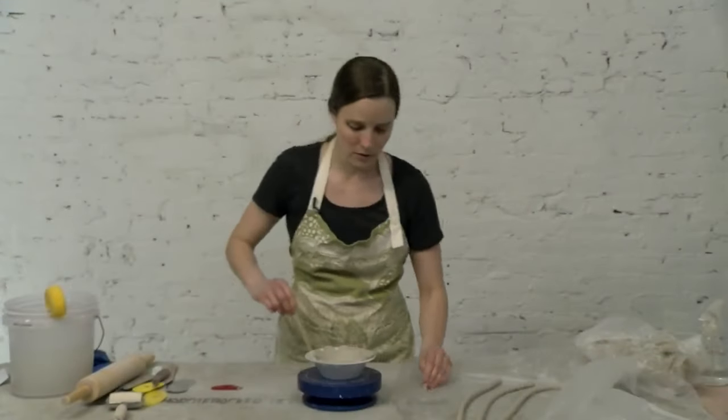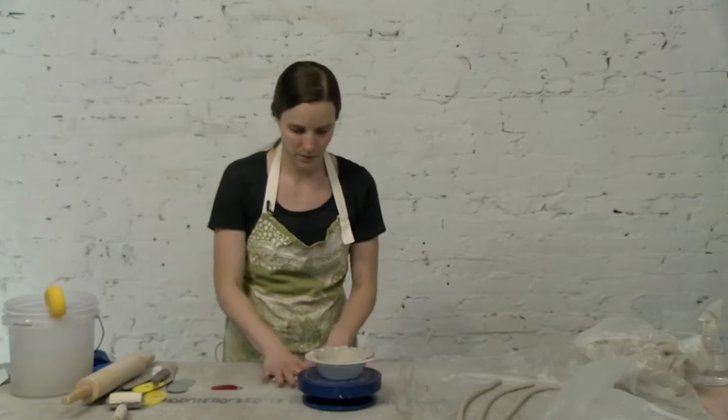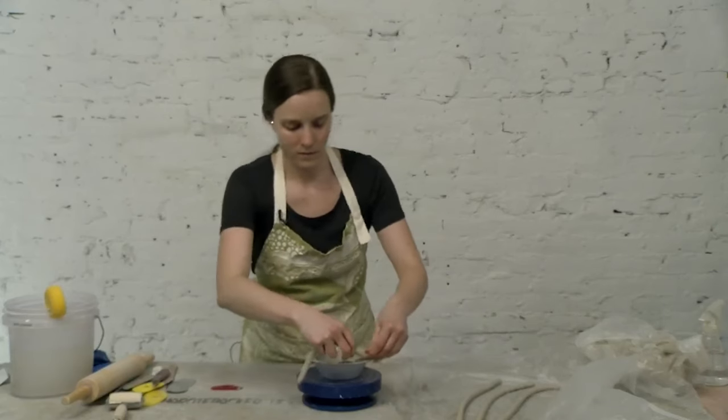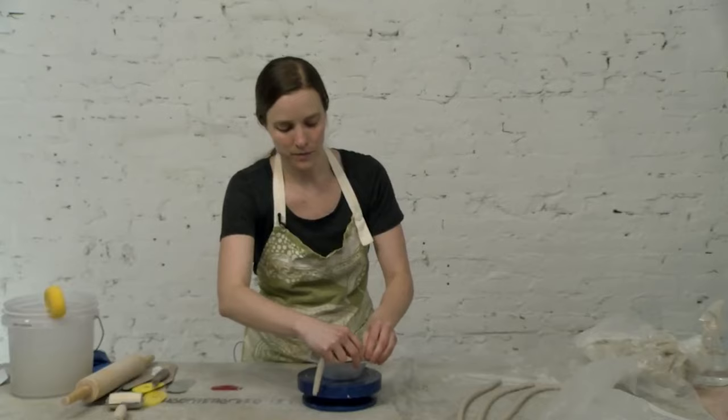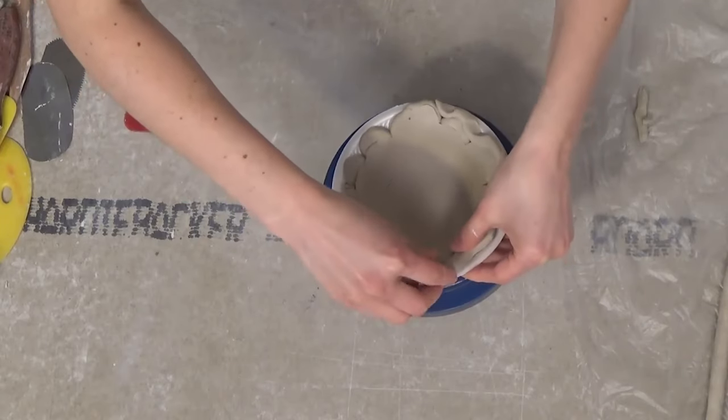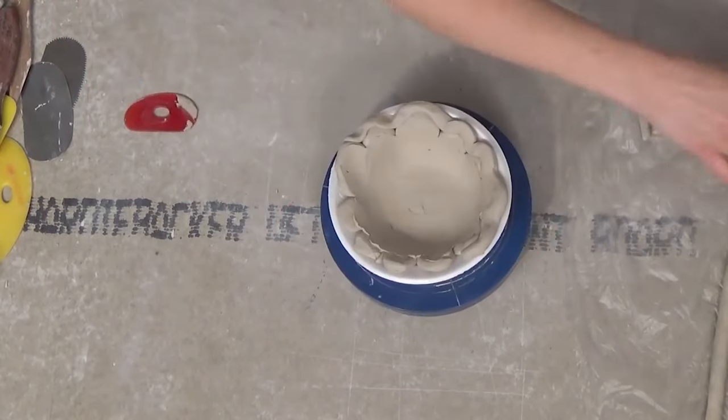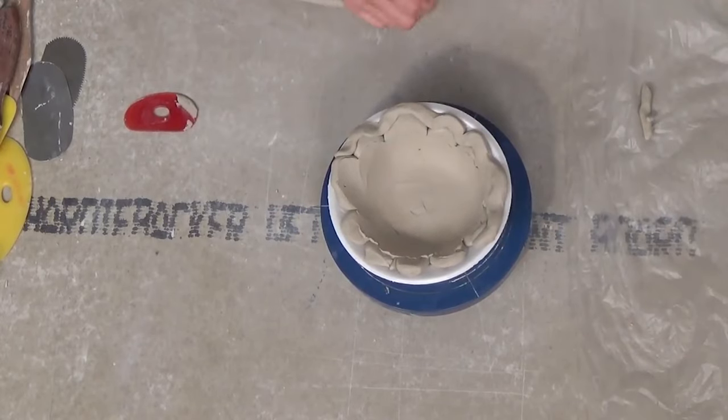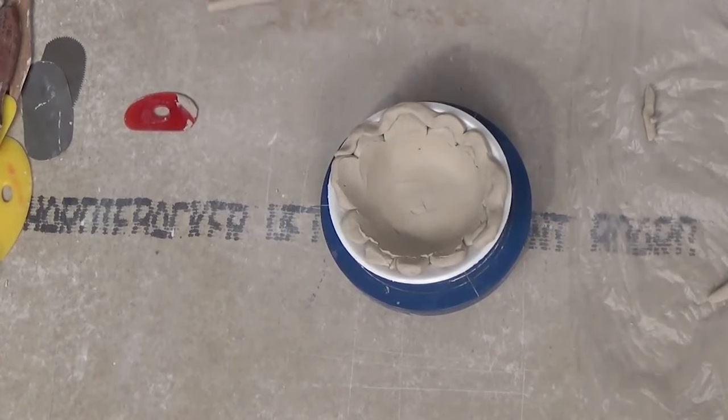Now what I'm going to do is actually add a coil around the edge. It will give a little bit more of a rim to the bowl.